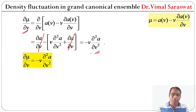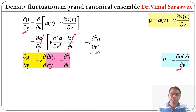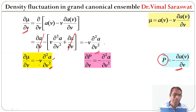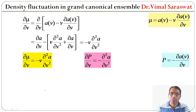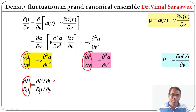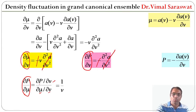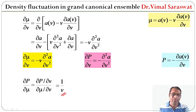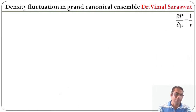Since p = −∂a/∂v, differentiating gives ∂p/∂v = −∂²a/∂v². Then ∂p/∂μ = (∂p/∂v)/(∂μ/∂v). The negatives and the ∂²a/∂v² terms cancel, so ∂p/∂μ = 1/v.